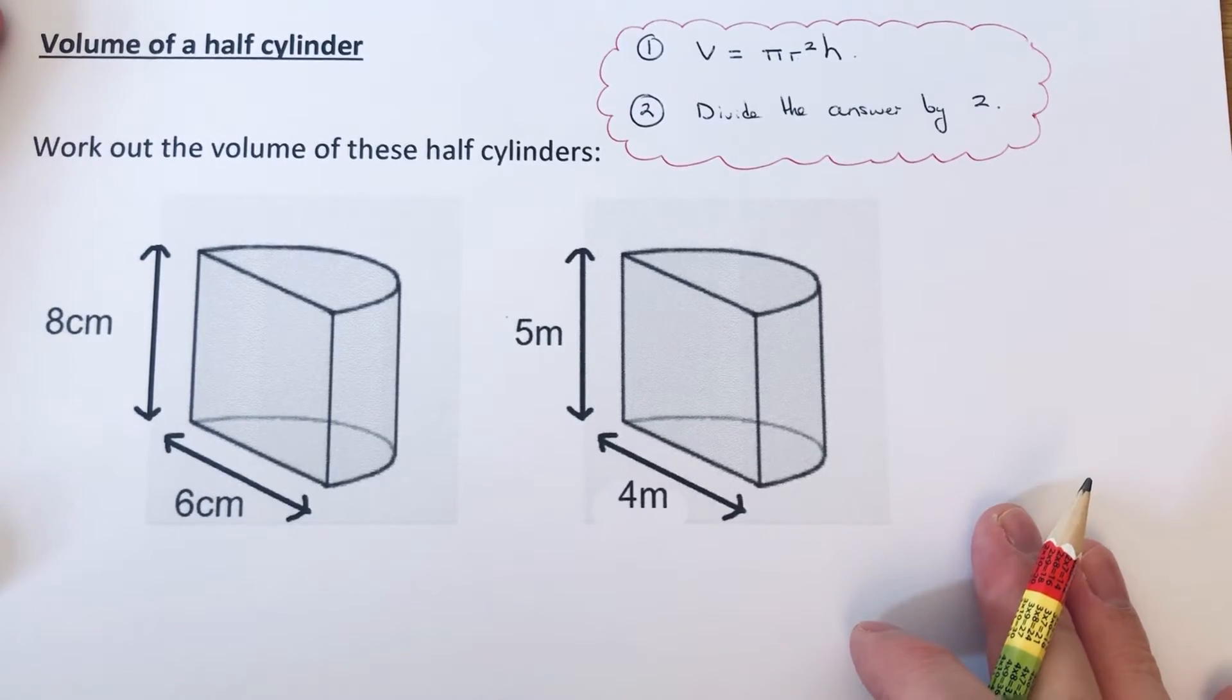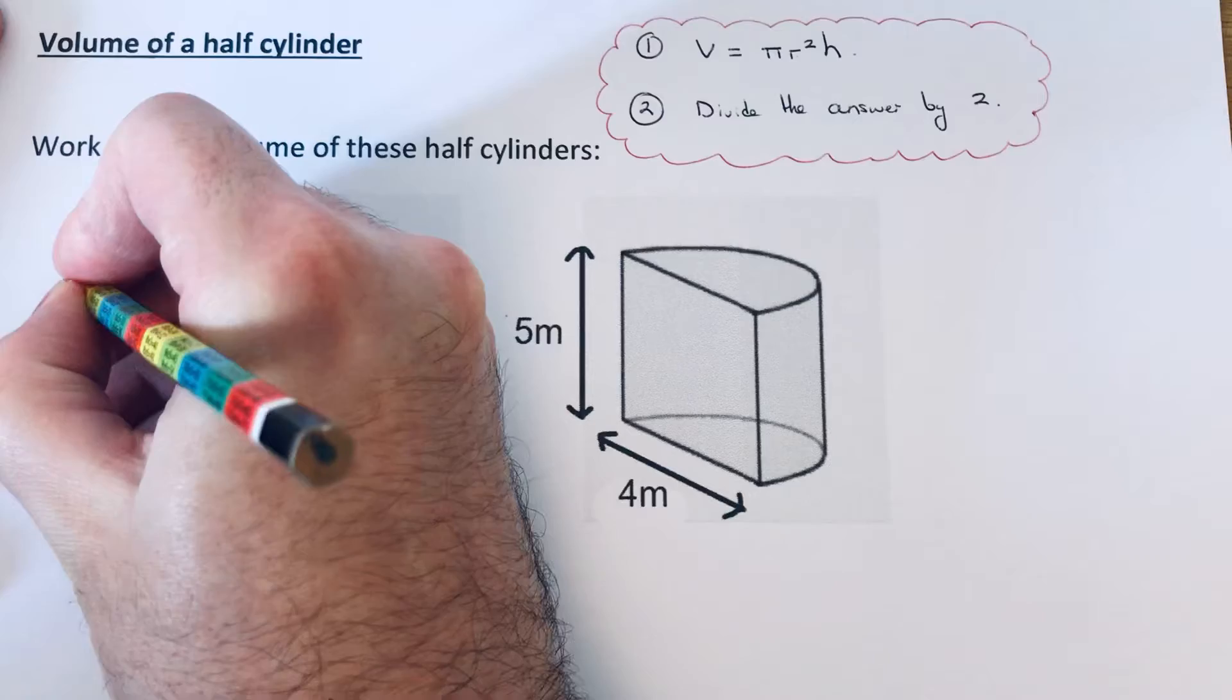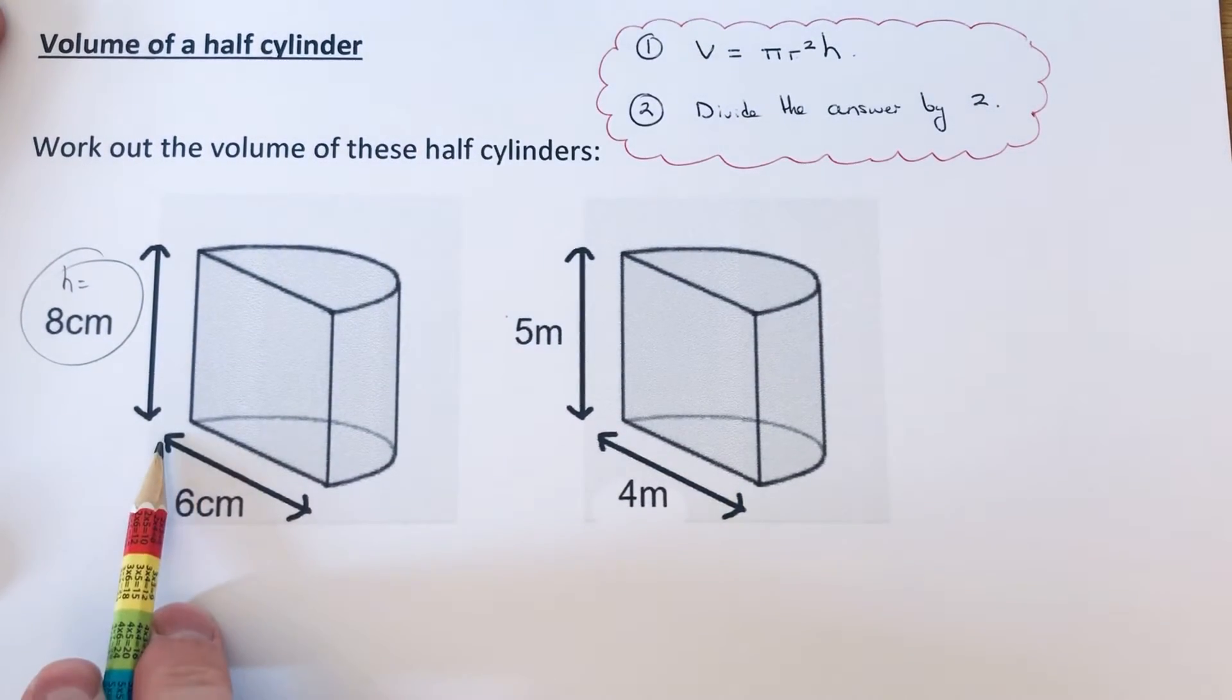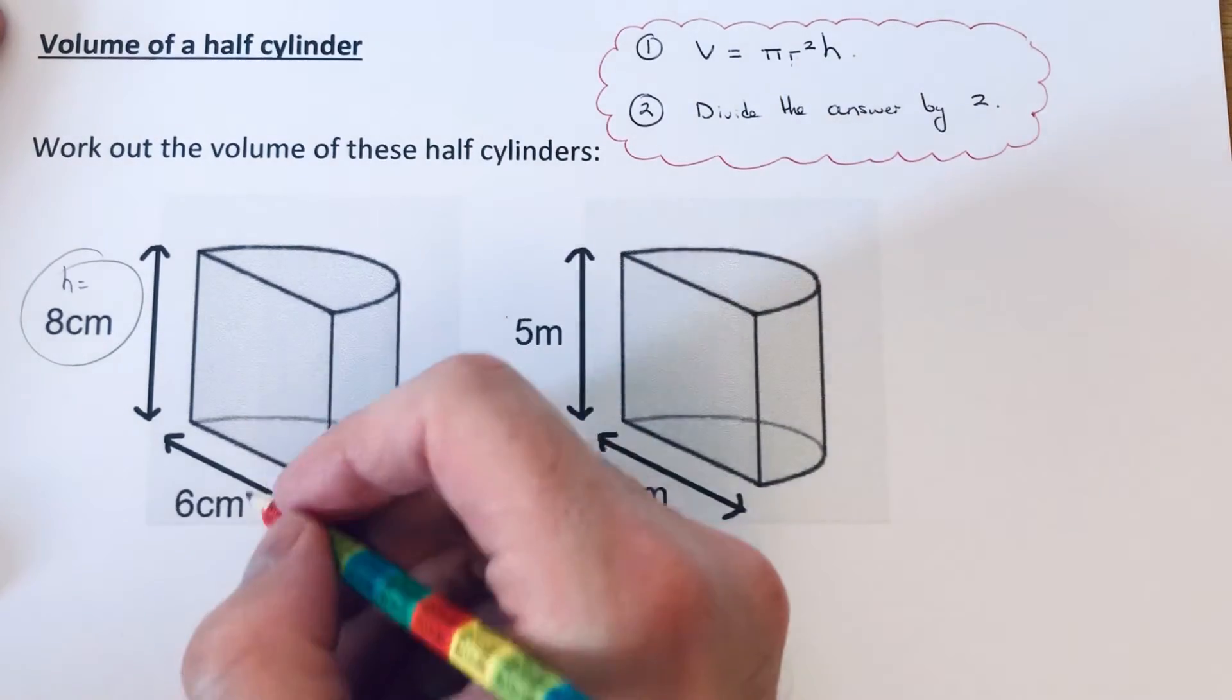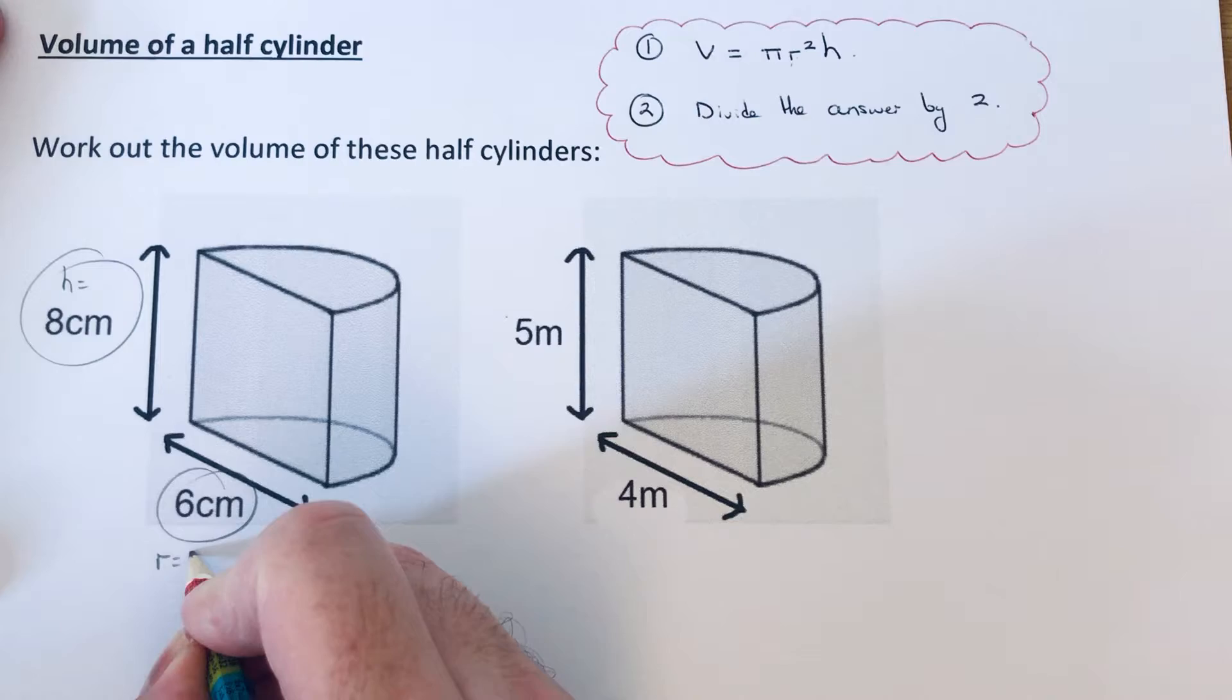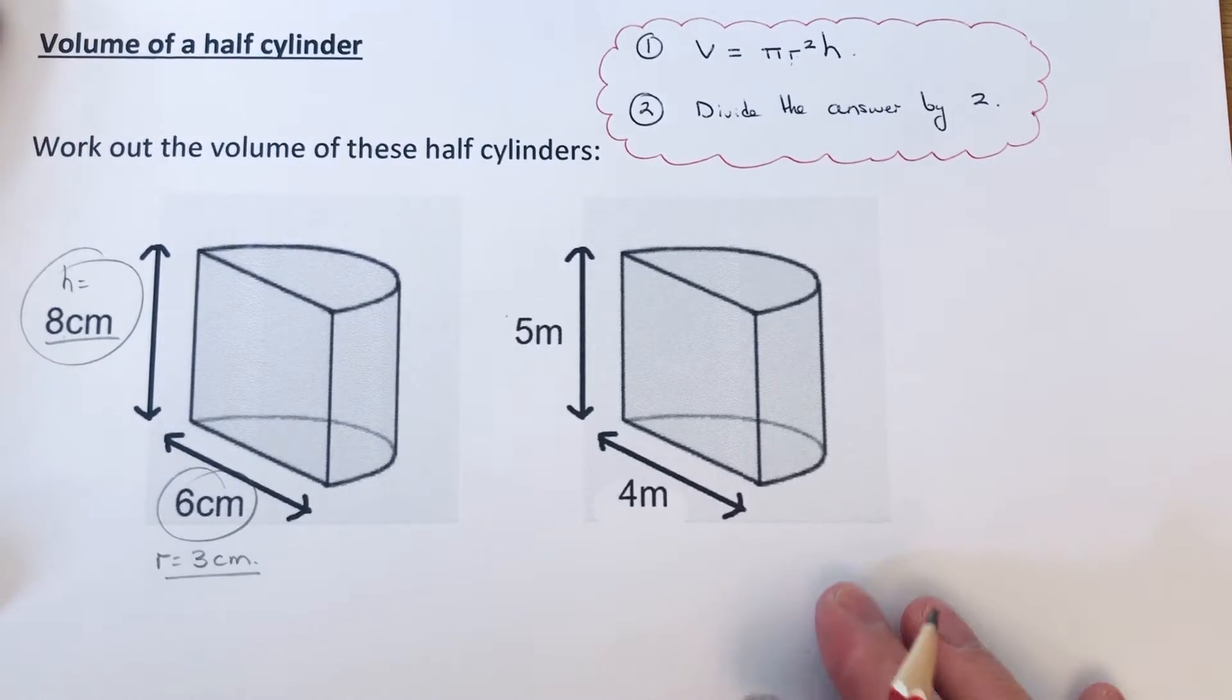Let's have a look at our first example. Our first cylinder has a height of 8 centimeters and a diameter of 6 centimeters. Remember, you need to use the radius in your formula, so we need to half 6 to give the radius. Half of 6 is 3. These are our two numbers which we substitute into the formula.